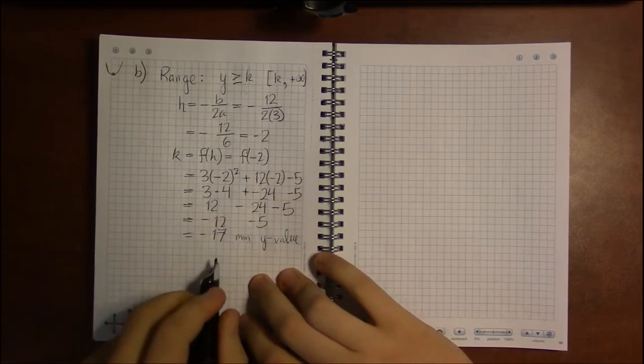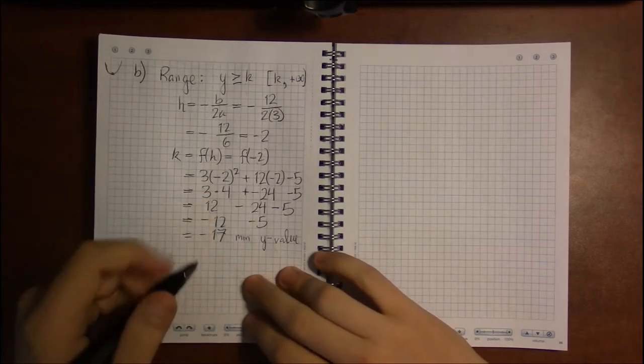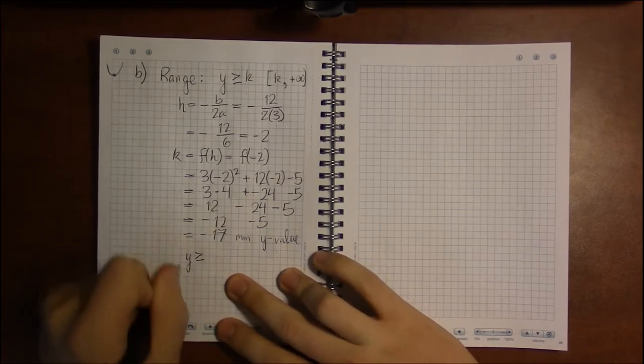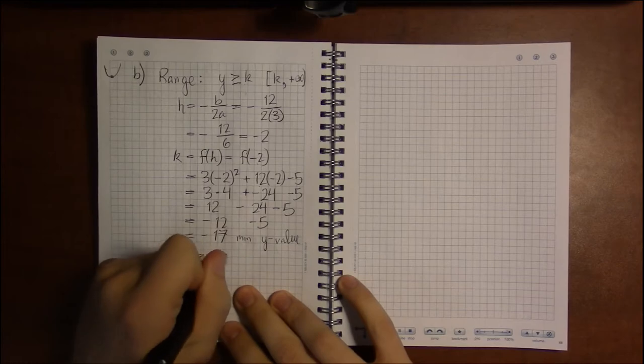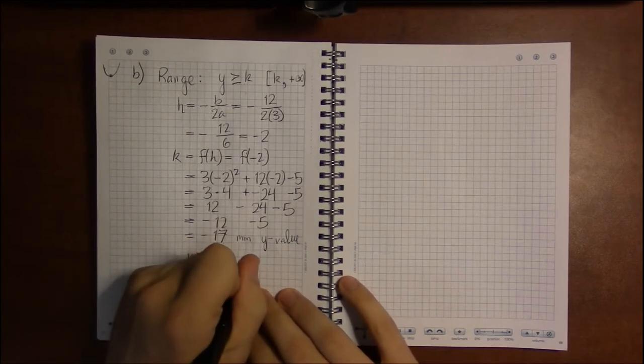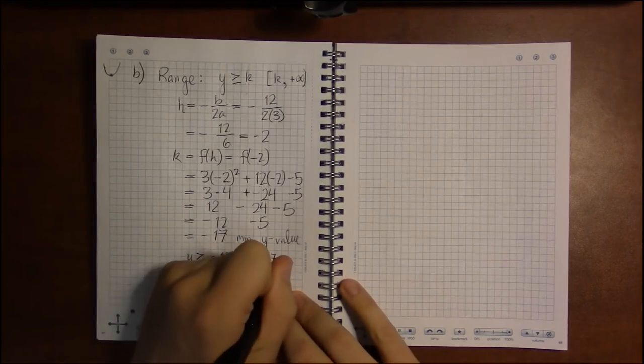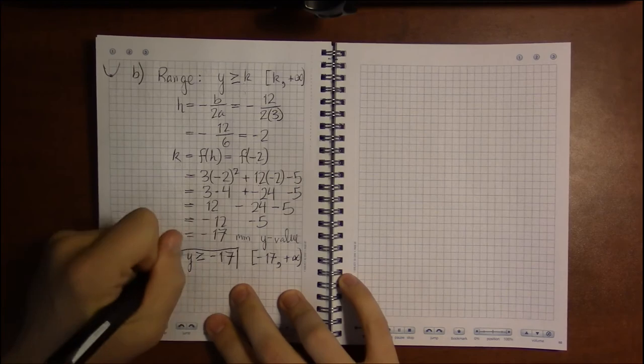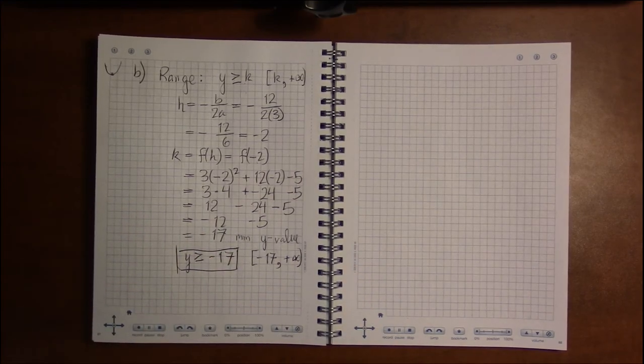So we can get any y value that's minus 17 or larger, which means our range is y can be anything greater than or equal to minus 17, or put in interval notation minus 17 to positive infinity, including the minus 17.